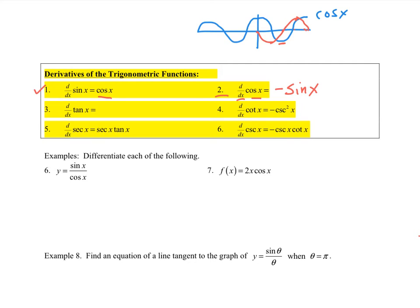The derivative of tangent is secant squared of x. Numbers 4, 5, and 6 are ones you just have to memorize — we're not going to show the techniques there. But for number 6, that will tell us what the derivative of the tangent is, and I want to prove it.